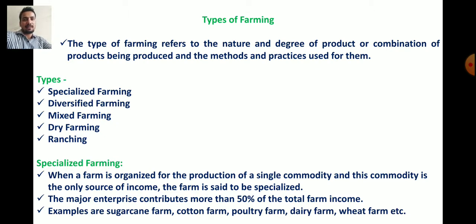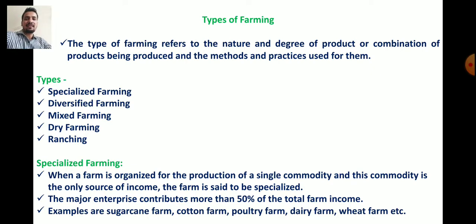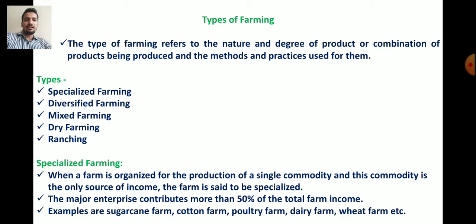In specialized farming, the farmer gets more than 50% of total income from a single enterprise. Examples include sugarcane farms, cotton farms, poultry farms, dairy farms, feed farms, and paddy farms in coconut-growing areas.